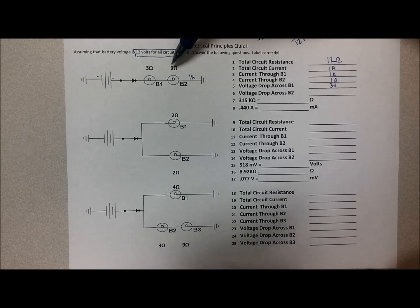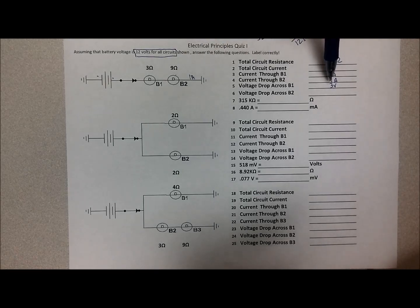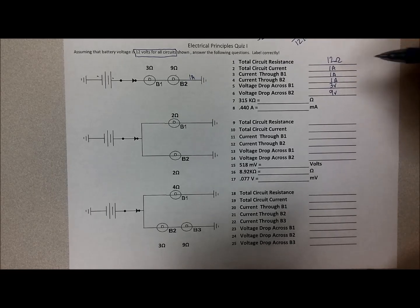So three volts are dropped in the first bulb, in bulb one. Now the remaining voltage, if we have three volts dropped there, the remaining voltage is obviously nine volts because it has to add up to 12. But we could also say, well, one amp times nine ohms is nine volts for a total of 12.